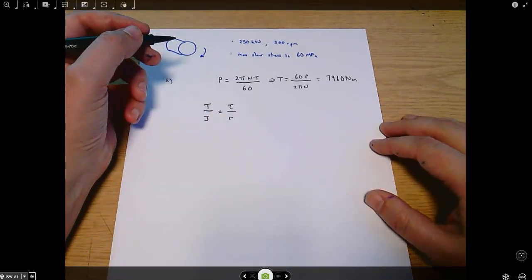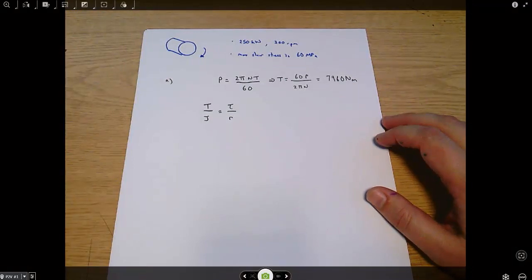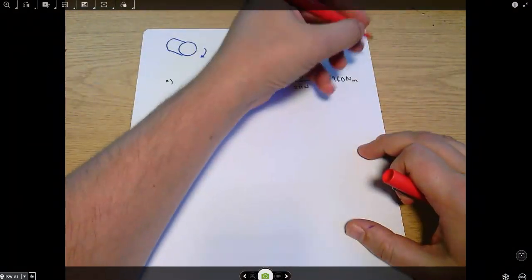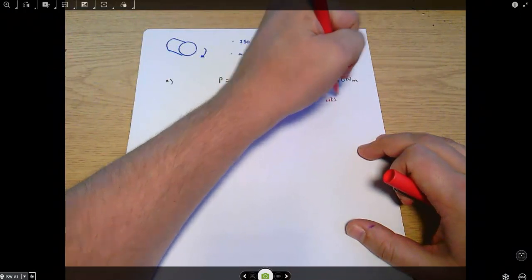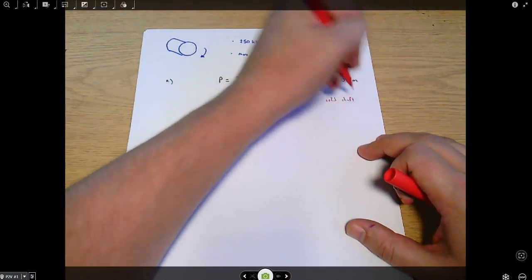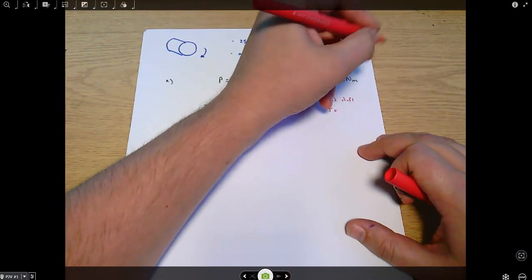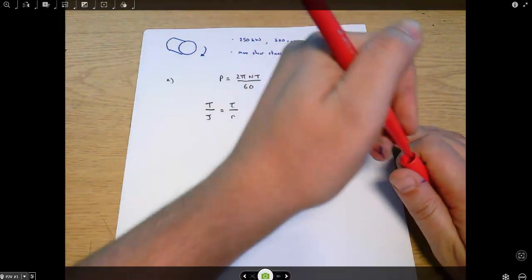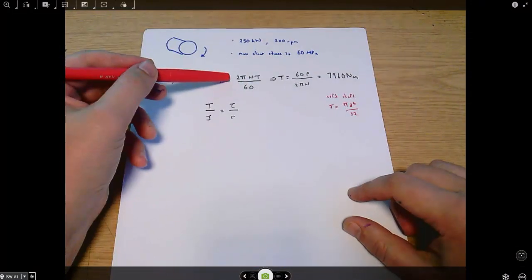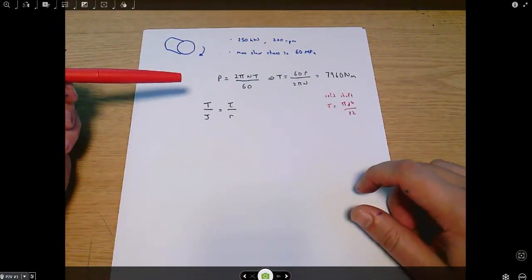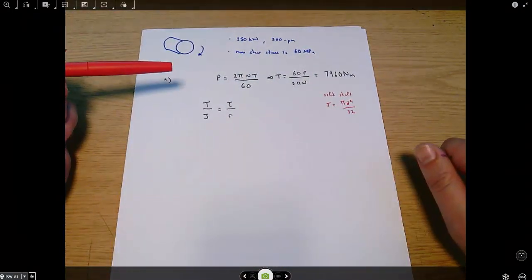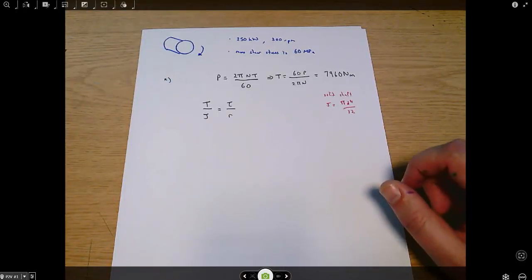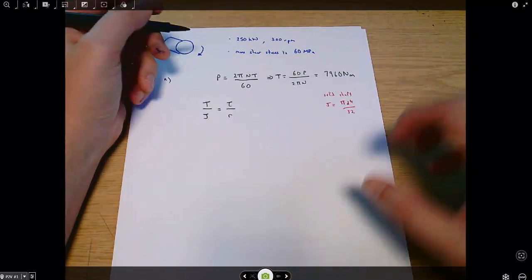I'll make a note that for a solid shaft, J equals pi d to the 4 over 32. This equation, this equation, and this equation, the three main equations I've used so far, they're all in your data sheet. You have to know when to use them but you don't have to memorize them.